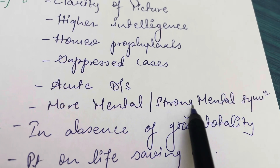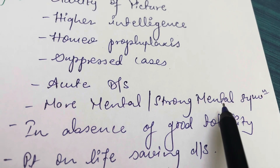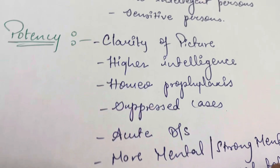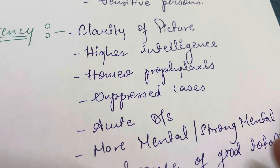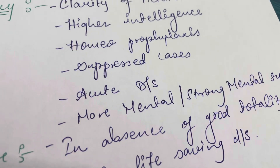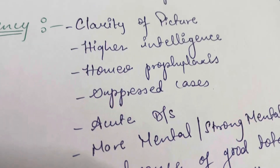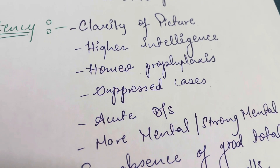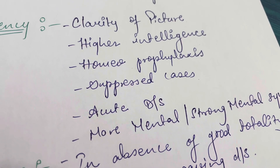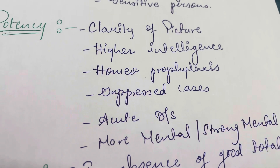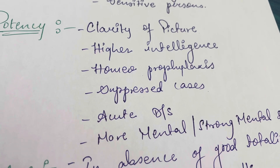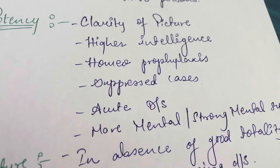Then more mental symptoms and strong mental symptoms — when there are prominent mental symptoms in any case, whether it is thyroid, DVT, or any other condition, and prominent mental symptoms are visible to you, give higher potency.